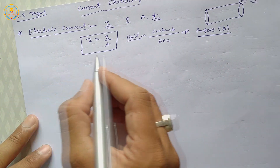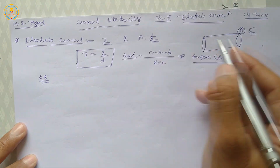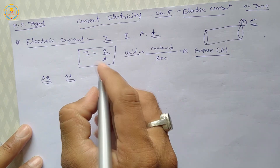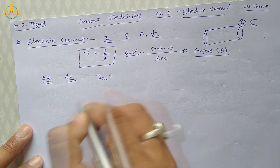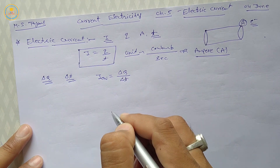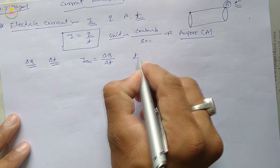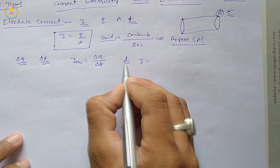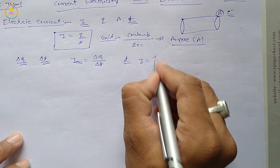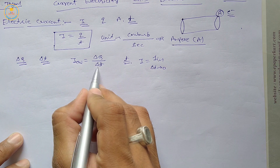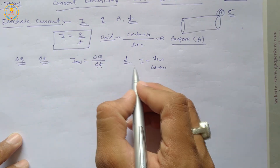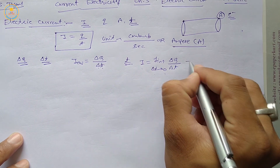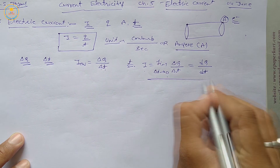If a charge ΔQ flows through cross-sectional area A in time interval ΔT, then the average electric current I_average equals ΔQ upon ΔT. For an instantaneous current, when time is very small, the limit as ΔT tends to 0 gives instantaneous electric current I equal to dQ upon dt.